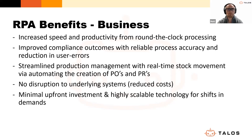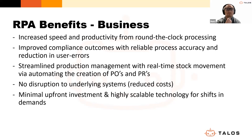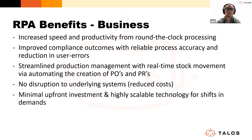Robots adhere strictly to regulatory or internal processes because they have no capacity to vary from the process they're taught. In a manufacturing context specifically, the ability to automate purchase orders and purchase requisitions means you can streamline production management, enable real-time stock movement, optimize your supply chain, and respond very quickly to changes in demand.